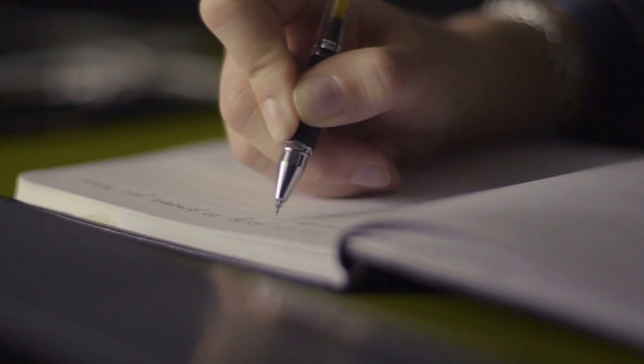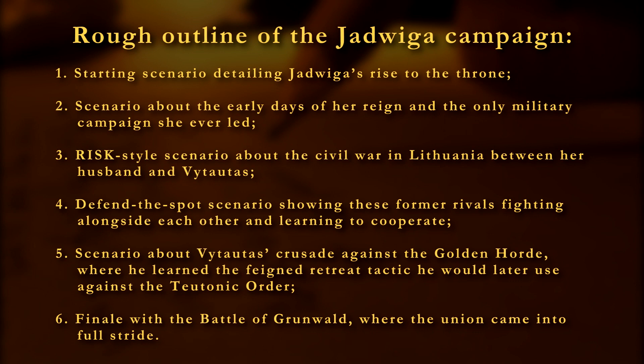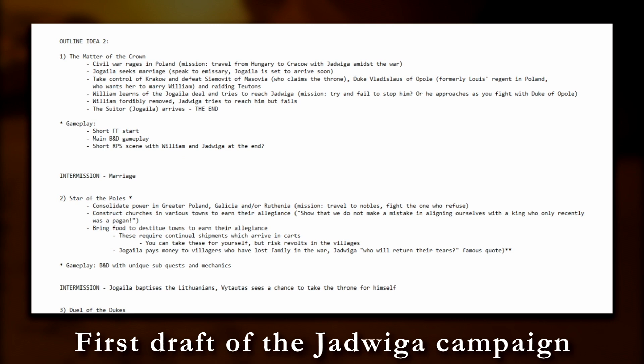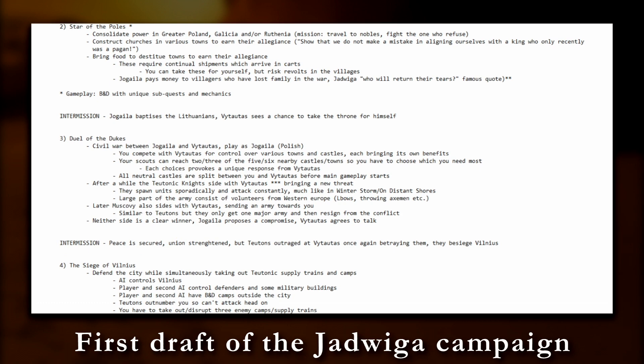The first draft is where you take this sprawling web of characters and plot points and whittle it down into something that fits in a campaign format. For the Jadwiga campaign, that meant cutting things down until it had a very rough outline for six scenarios, each with specific goals and gameplay ideas, and a narrative that tied them all together. In practice, this turned into a simple text document where I listed all the major events that were to take place in each scenario. To make sure the story wouldn't require 10,000 words of voice-over, or 10 or more scenarios, I had to drop several interesting plot threads during this process.